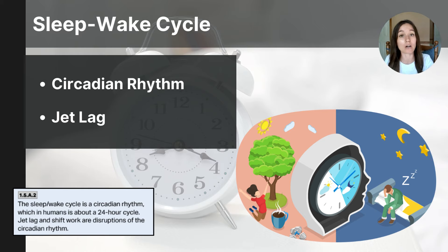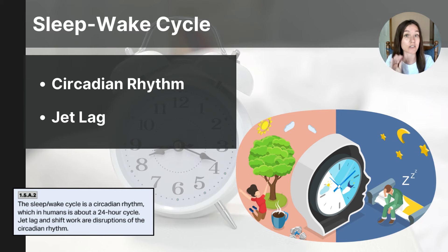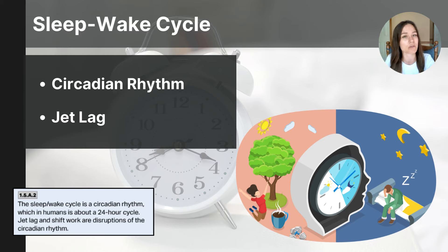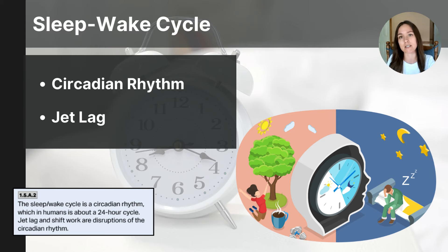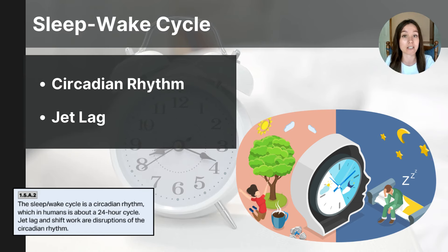Our circadian rhythm is our 24-hour sleep and wake cycle that is an internal drive influenced by environmental cues. Our hormone melatonin is important for regulating our sleep, and it's influenced by light and darkness. This change helps signal to our body that it's time to sleep or time to wake. Our core body temperature also fluctuates through our circadian rhythm — it typically drops at night, helping us fall asleep, and rises in the morning, helping us wake. We're usually unaware of these drives until we alter them, like staying up all night, switching from a day shift to a night shift, or changing time zones.